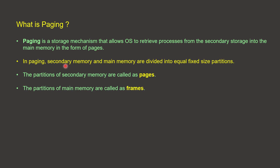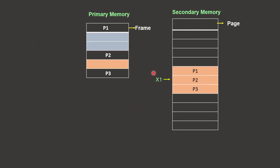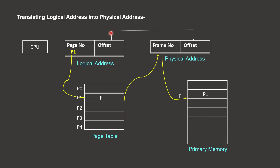In secondary memory, we separate the processes into pages. When we bring these processes from secondary memory into primary memory, we load those pages accordingly.